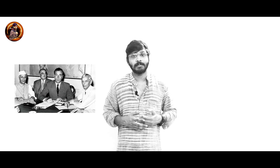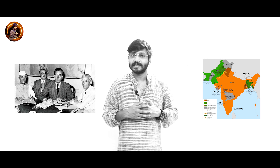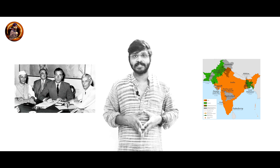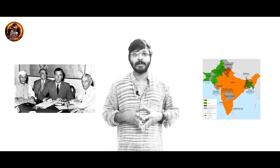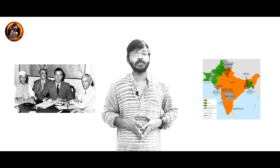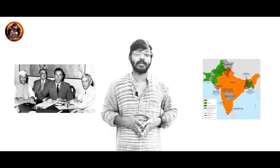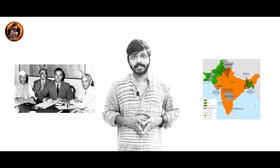Accordingly, it was decided to cede Western Punjab, the North-West Frontier Province, Sindh, and Balochistan in the western sector, and East Bengal in the eastern region to Pakistan. These two regions were around 1,600 km apart with India in between them. Muhammad Ali Jinnah was appointed as the Governor-General of the new nation of Pakistan. But one year later, on September 11, 1948, Jinnah died.